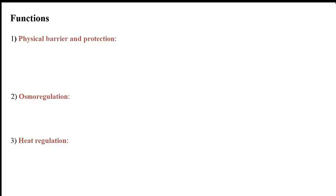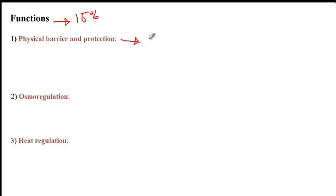The skin or integument is the largest part of the body, accounting for 15% of the total body weight. The functions of the system include providing a physical barrier and protection. The skin limits movement of chemicals while providing mechanical protection against pathogens — it's a barrier against pathogens. If we have a cut in our skin, that's when we become prone to potential infection at that site of injury.